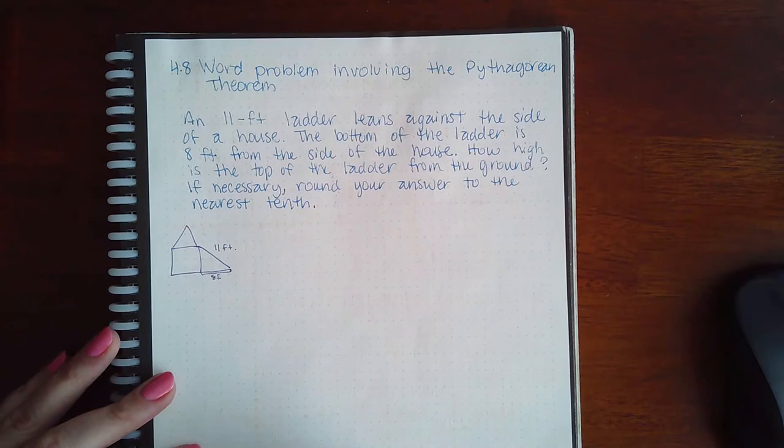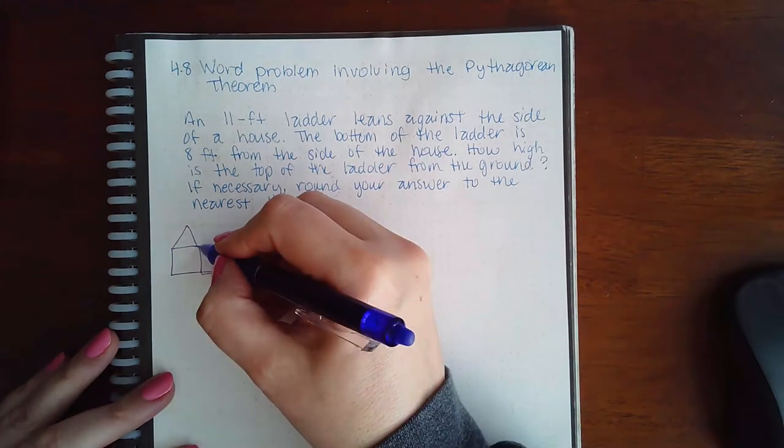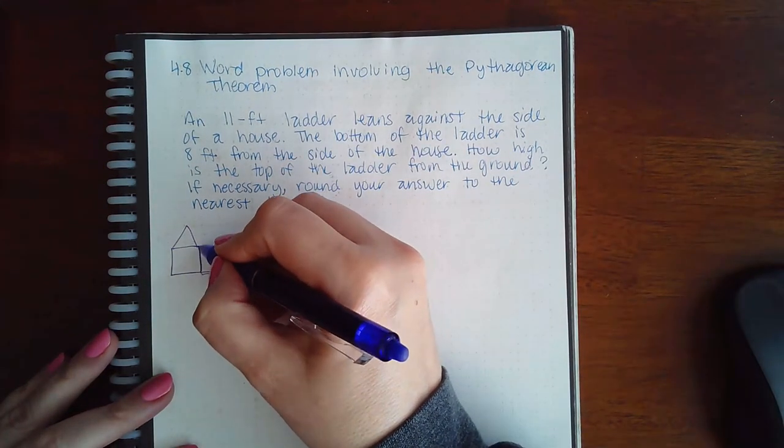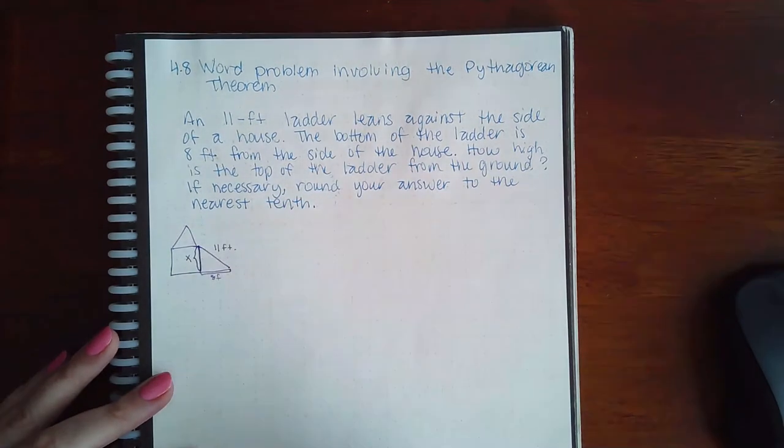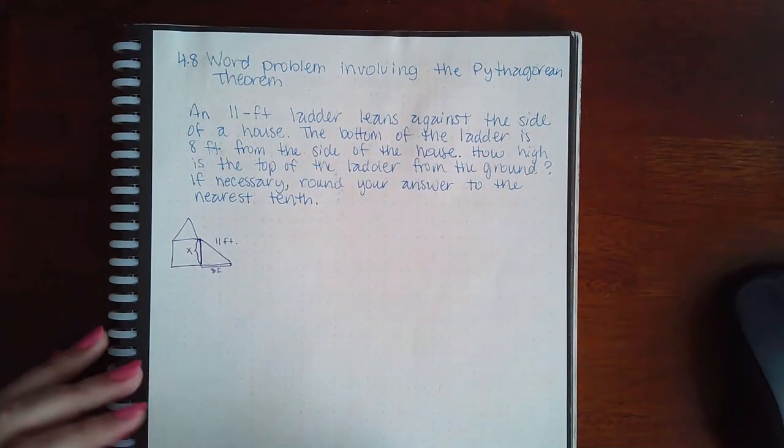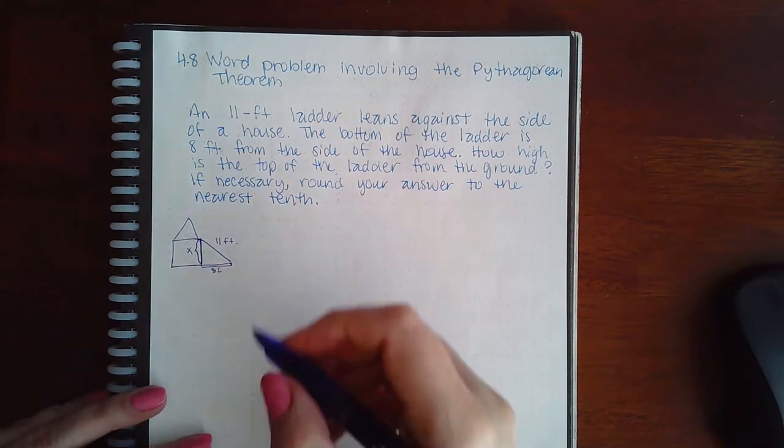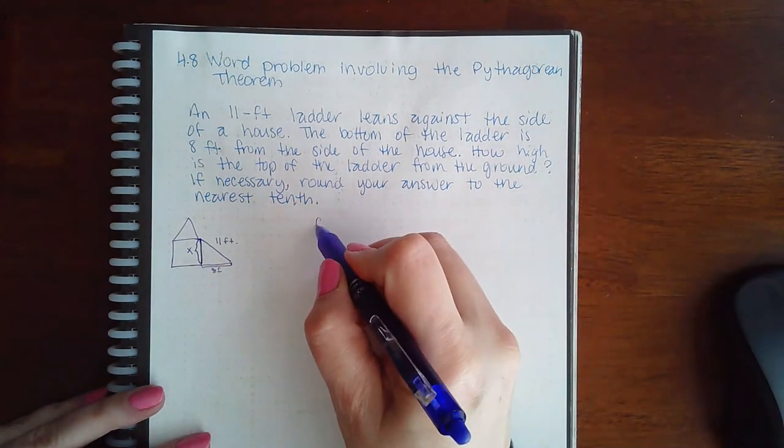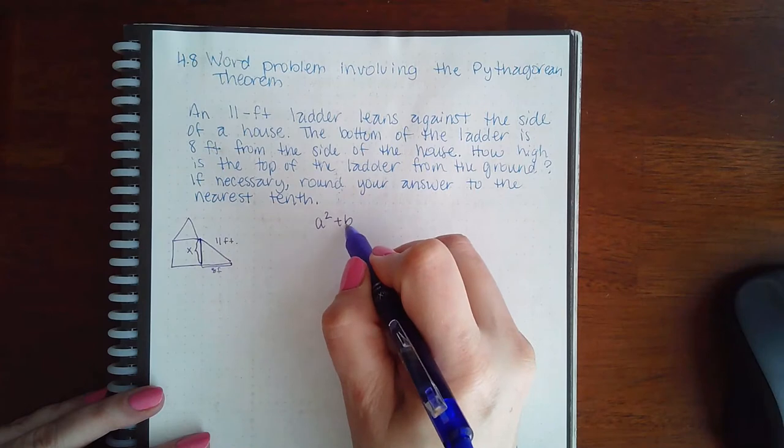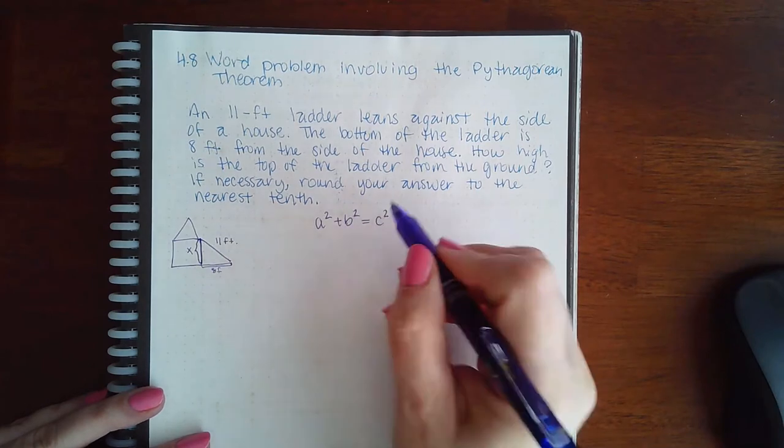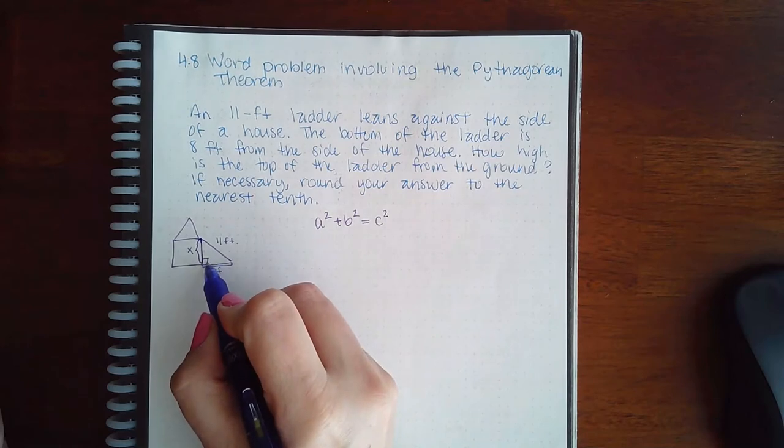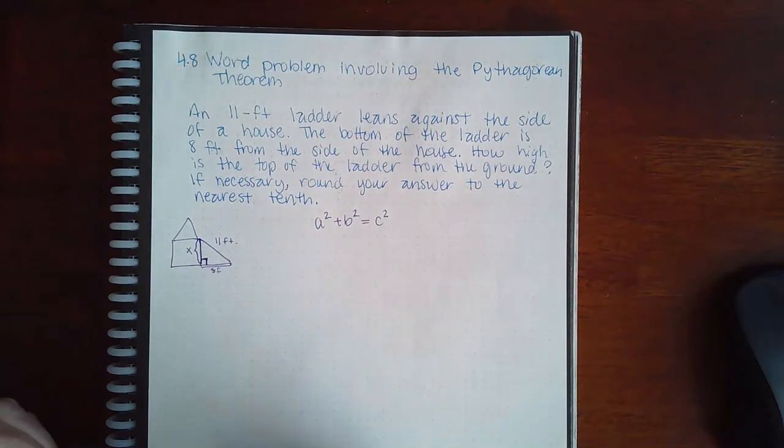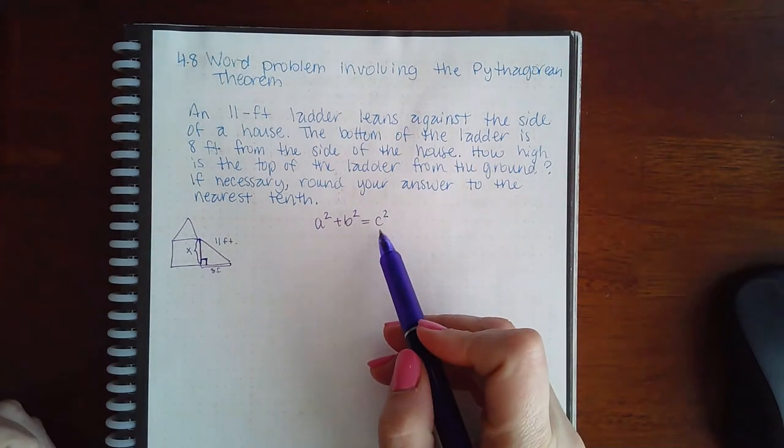How high is the top of the ladder from the ground? They're asking for this measurement here. If necessary, round your answer to the nearest tenth. From the Pythagorean theorem, it's a squared plus b squared equals c squared, where a and b are the legs—the sides around the right angle—and c is the hypotenuse.